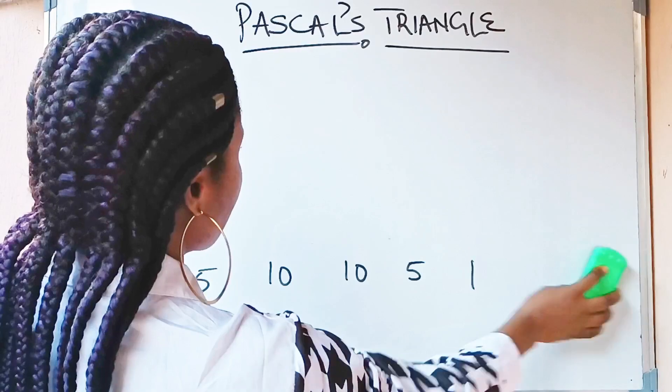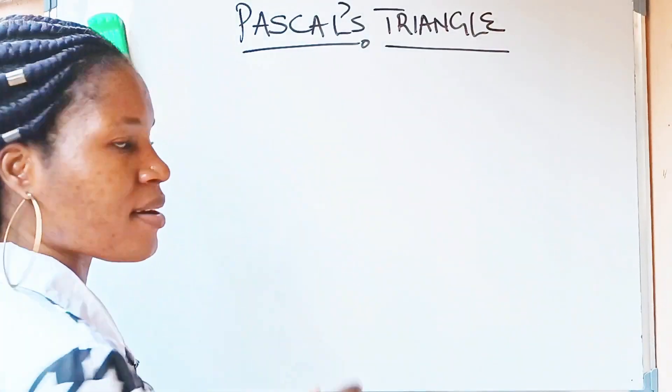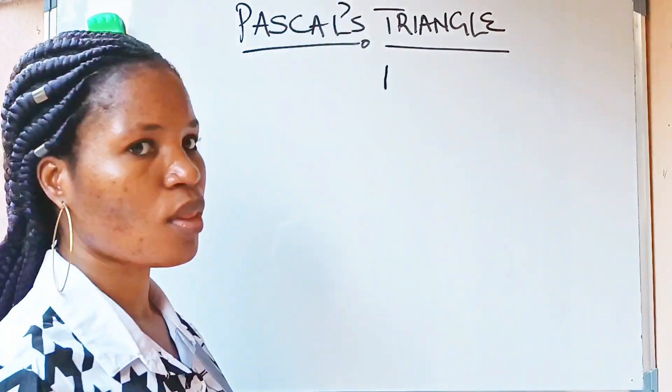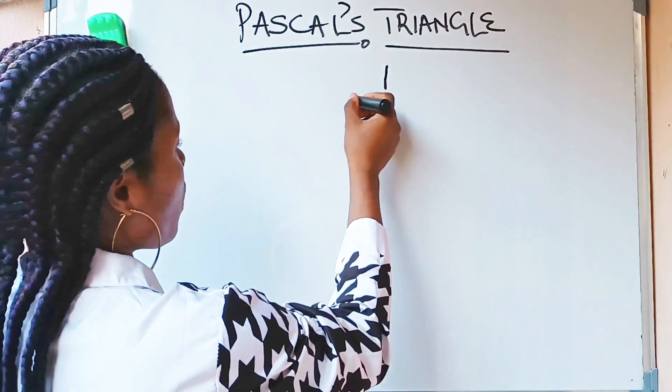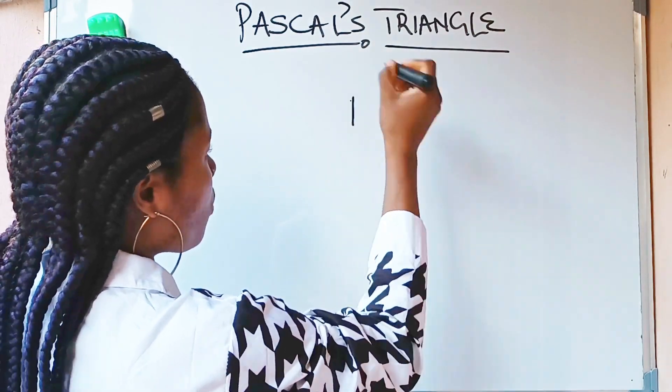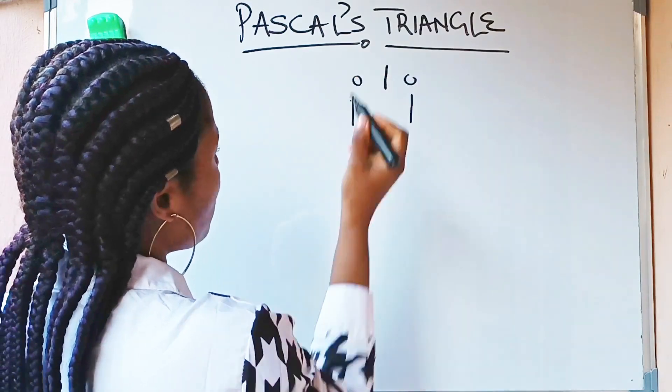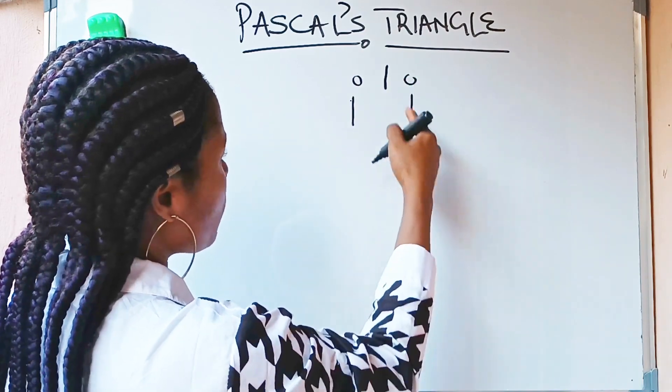I am going to clean everything right now and we are going to draw it by ourselves. To draw the Pascal's Triangle, the first one should be 1. The first number you should write should be 1. Then you are going to write another one and another one beside it. Why? Because it is assumed that there is 0 here and there is 0 here. So, 0 plus 1 will give you this 1. This 0 plus this 1 will give you this 1.